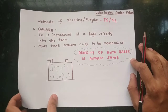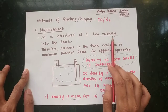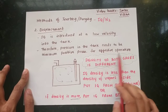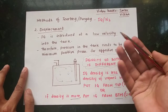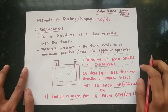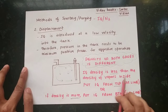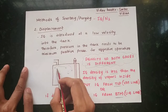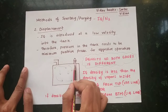Now let's look at the displacement method. In displacement method, the IG is introduced at a low velocity. This method is used when both gases have different density values, so there's no need to introduce at high velocity. For example, if the IG density is less than the density of vapors inside the cargo tank, the IG is lighter, so it will create a layer on the top side.